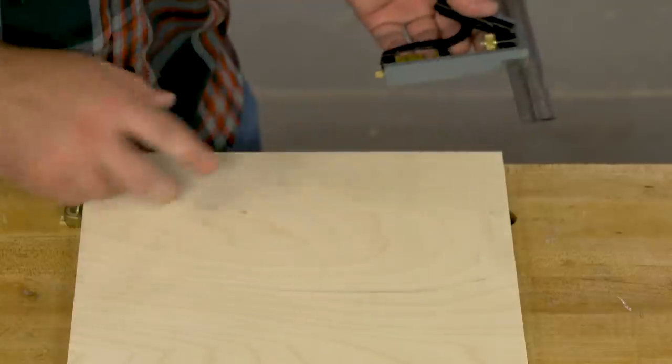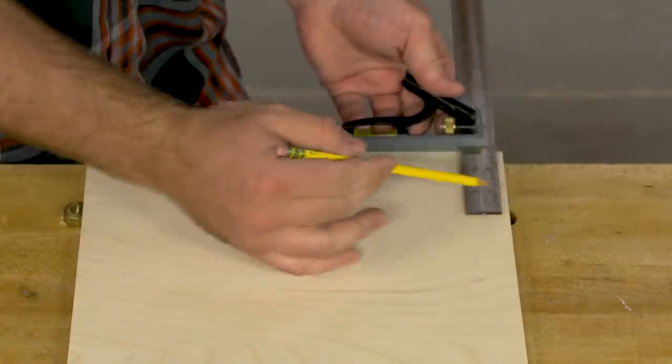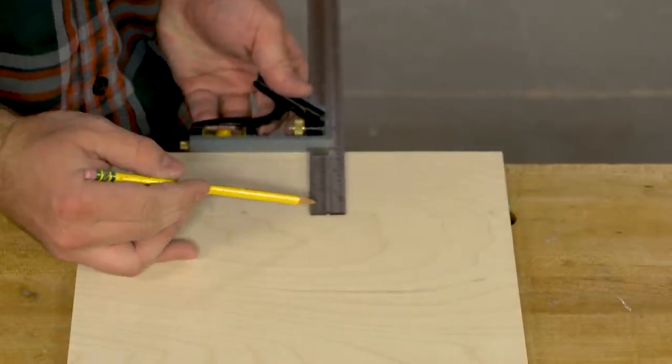I'm pretty sure we've all seen the trick of using a combination square to scribe a parallel line to the edge of a workpiece.